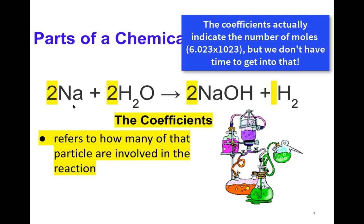And what that represents is how many of that particle are involved in the chemical reaction. So I have two atoms of sodium, two molecules of water. I end up with two formula units of sodium hydroxide plus one molecule of hydrogen gas.